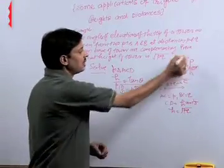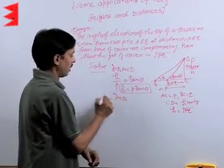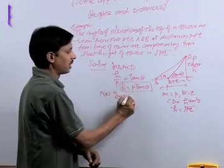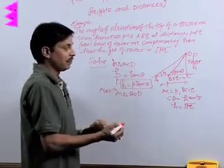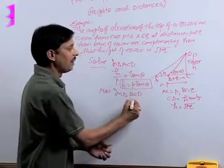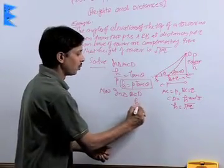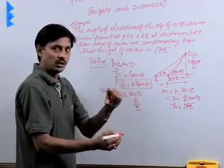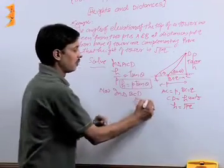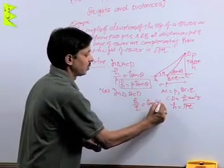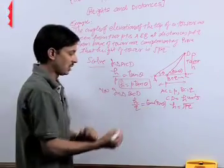If we consider triangle BCD, in triangle BCD here angle is complementary, that is angle at B is 90 minus theta. We will apply H upon Q because H is the height that is the perpendicular and Q is its base. Again we will apply the tan and that is what, 90 minus theta angle is 90 minus theta.